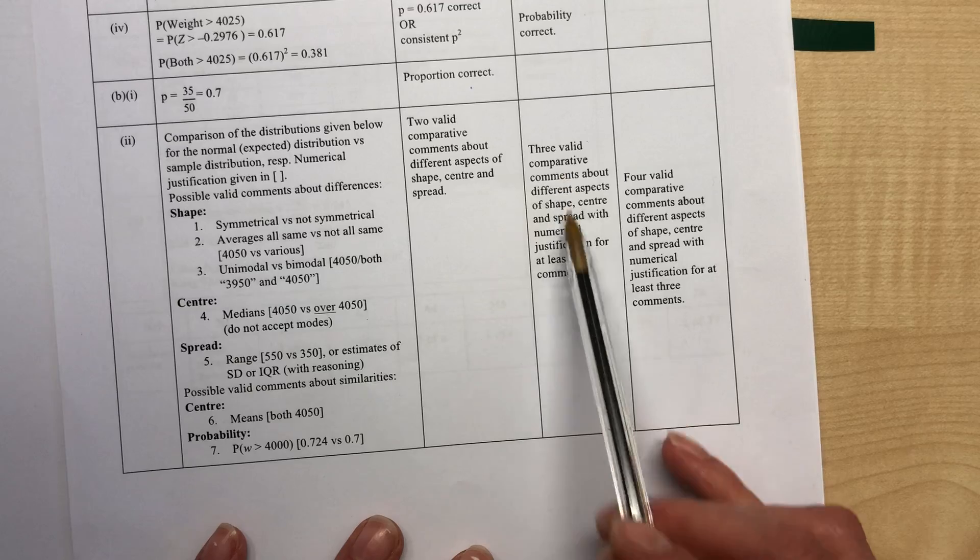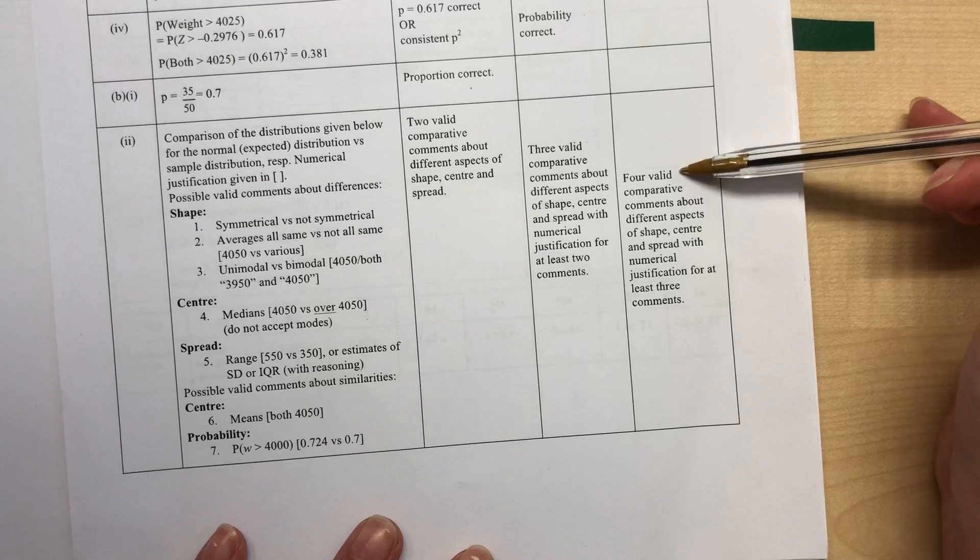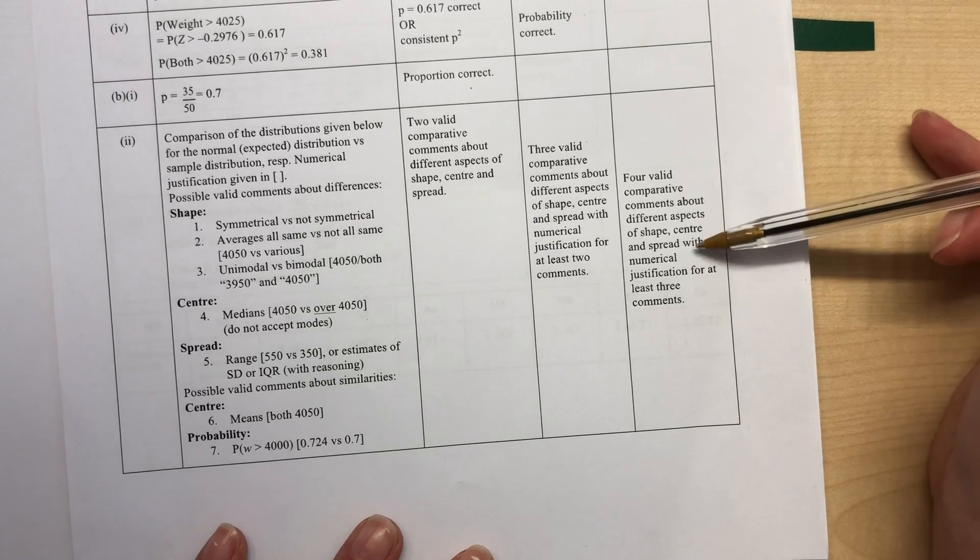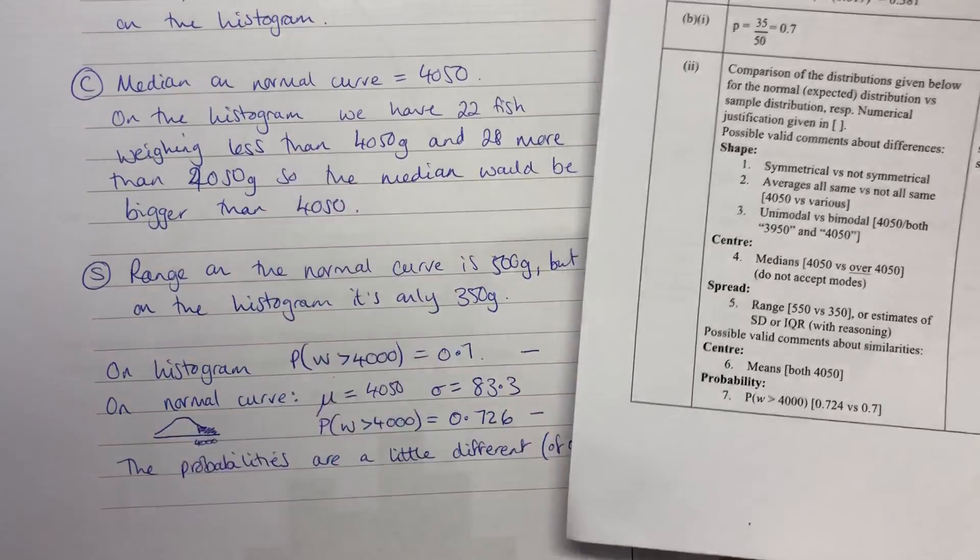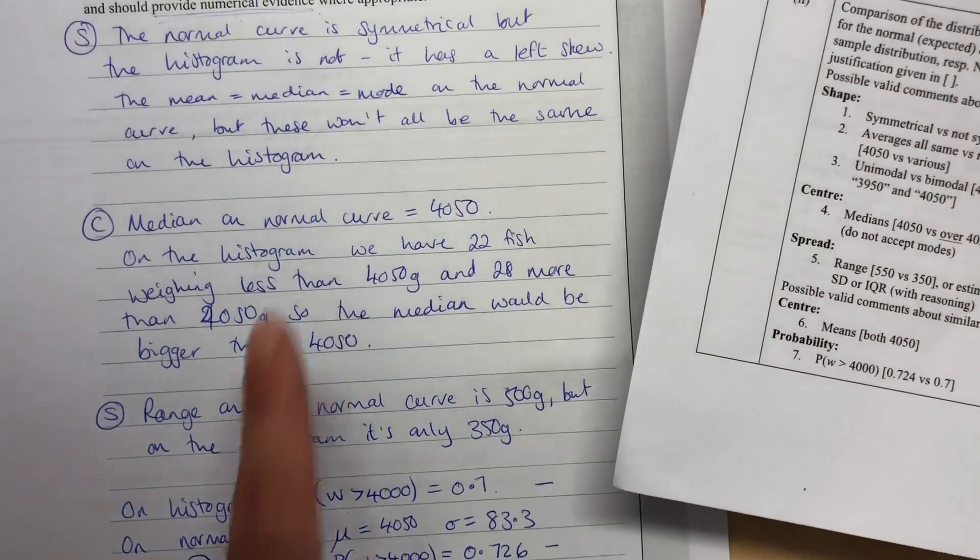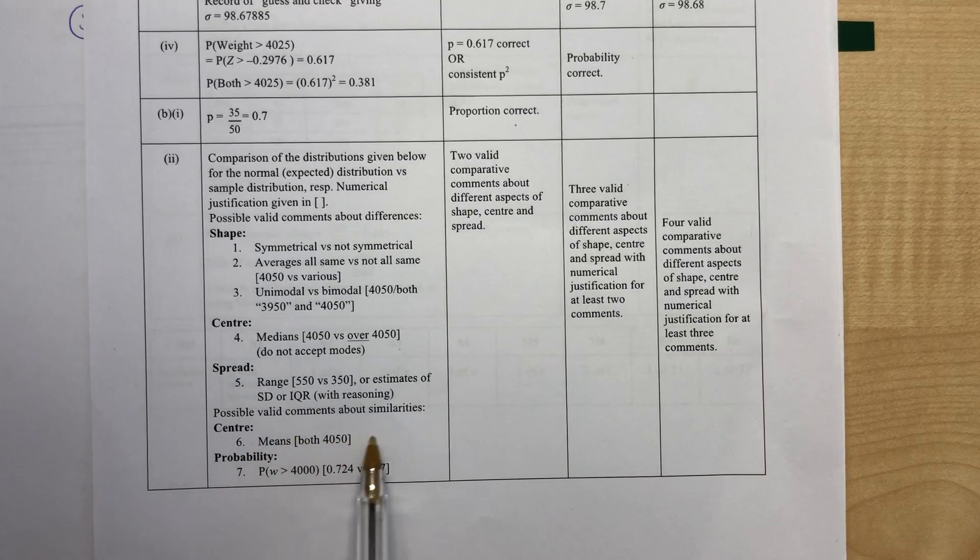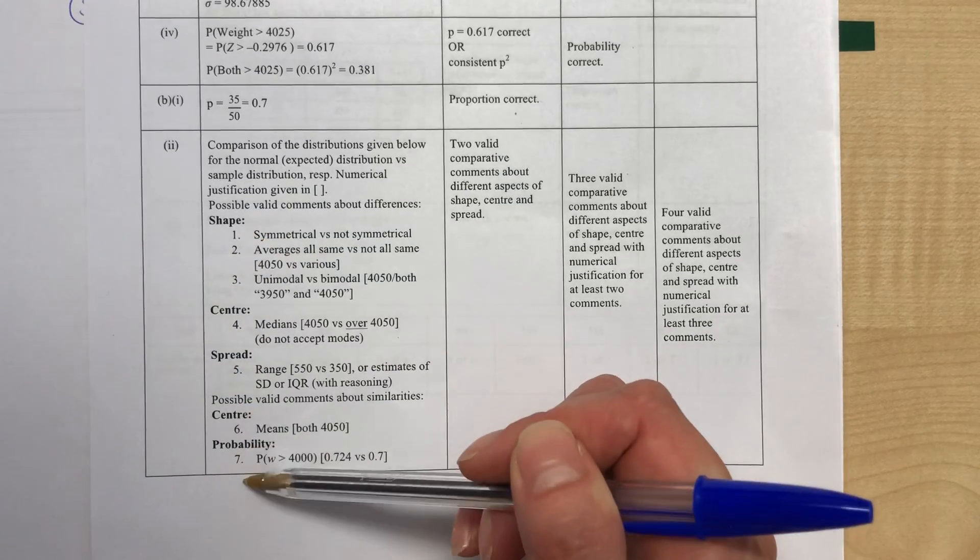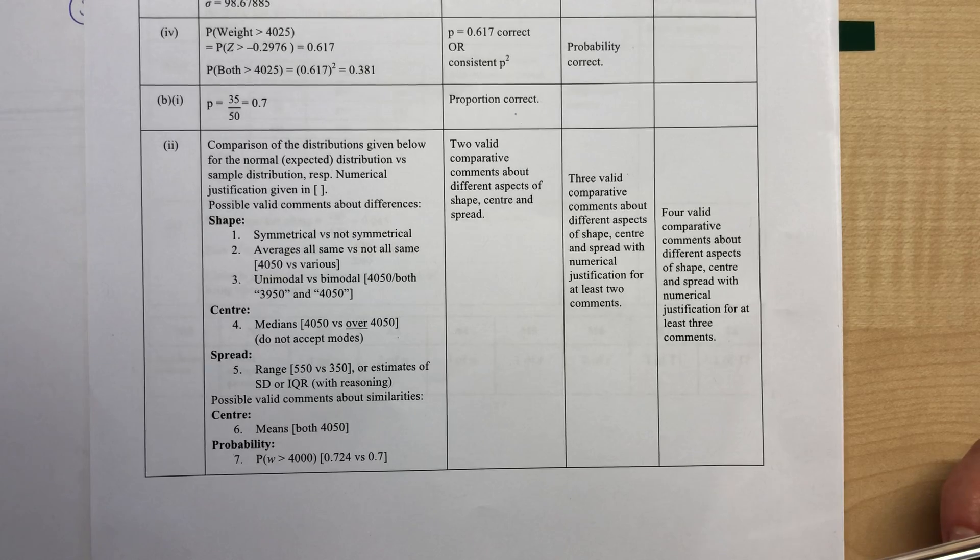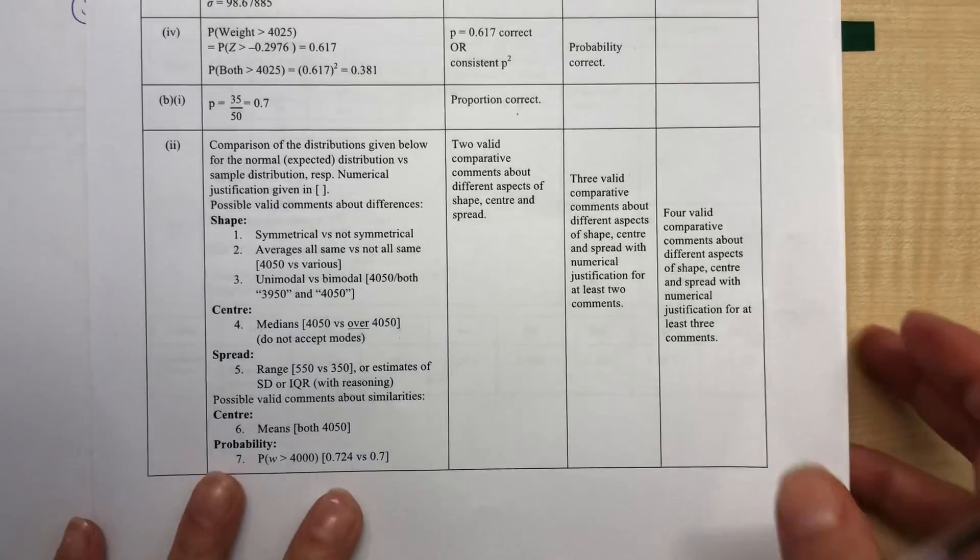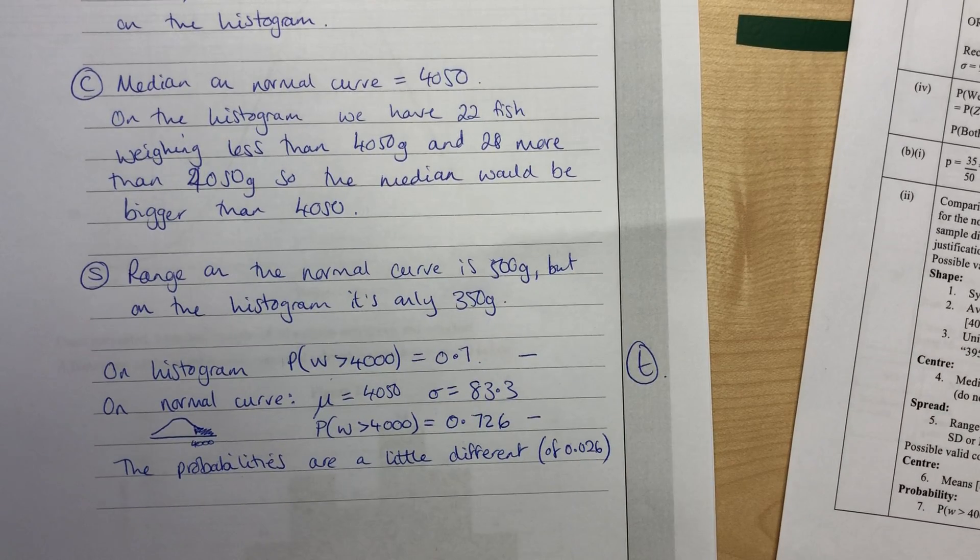Now, if we go to our mark scheme, we've made three comparative statements, at least two of them with comments, so there's merit, no problem. Four valid comparative statements with numerical justification for at least three of them. We've done that too. We've done three where we've included numbers, and we made some more statements at the top there that weren't with numbers that count as our fourth or more. This was the bit that we didn't do. We don't need it, though. There's seven possible points we could have done, and we only need four of them. So you can have a look there if you want to see other ideas of what you could have done. But what we've done here is enough to earn us the excellence mark for that portion of the paper.